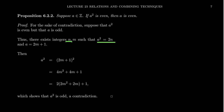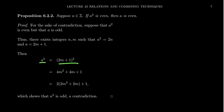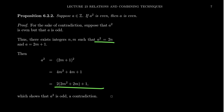If a² is even, there exists an integer n such that a² = 2n. If a is odd, there exists an integer m such that a = 2m+1. Substituting: a² = (2m+1)² = 4m² + 4m + 1 = 2(2m² + 2m) + 1, which is odd. So a² is both even and odd — a contradiction.